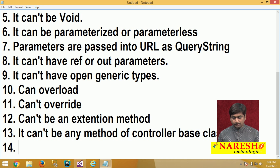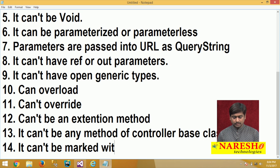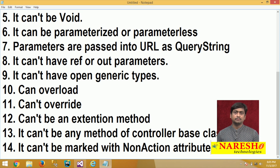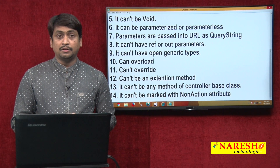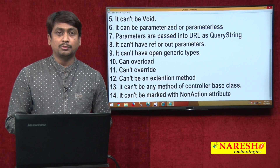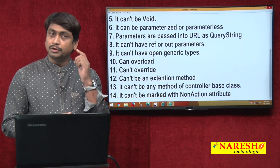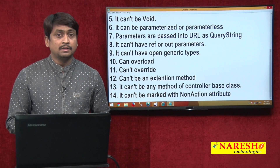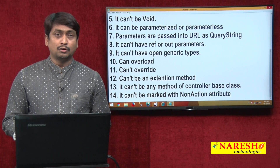Another important point: controller action methods cannot be marked with the NonAction attribute. NonAction is an attribute used to designate non-action methods. If you accidentally define this attribute on any action method, it will not work as an action method. So you must make sure that an action method is not configured with the NonAction attribute.